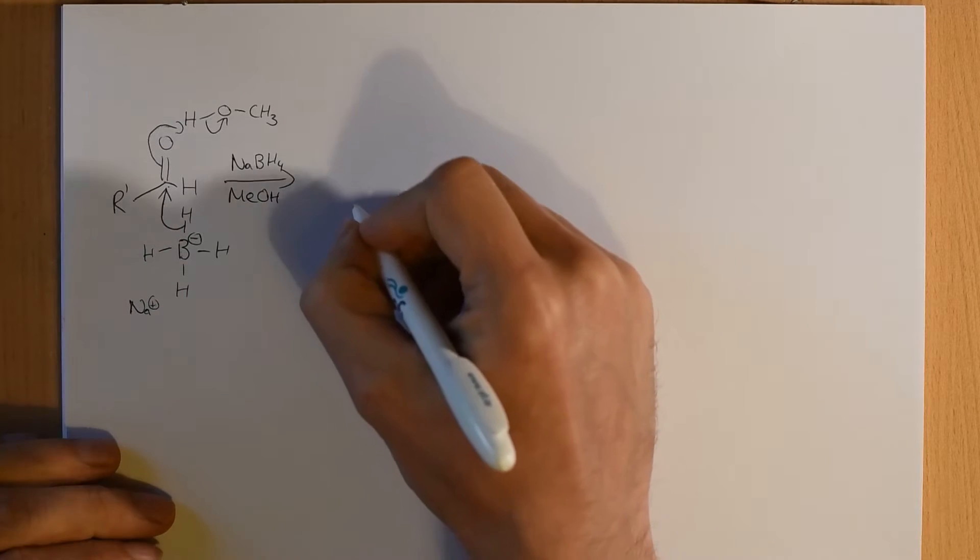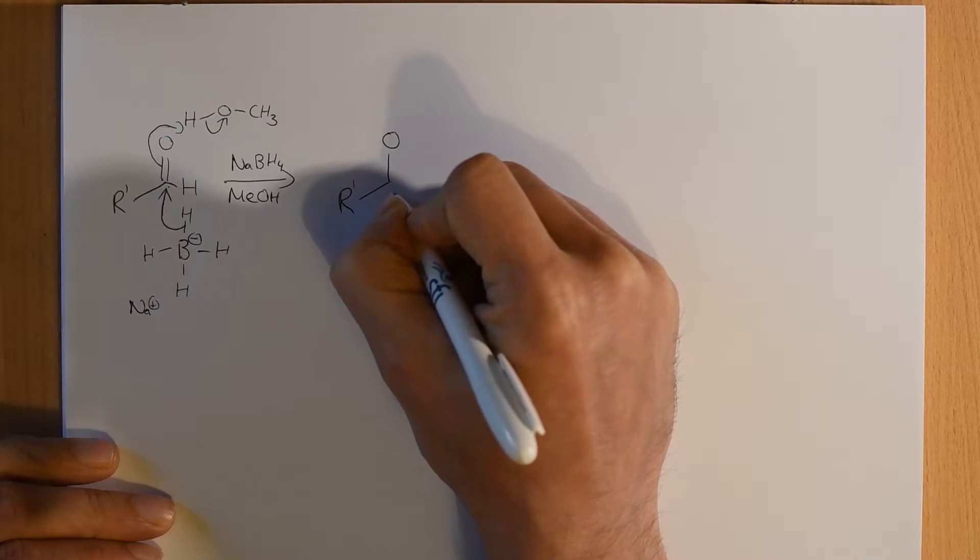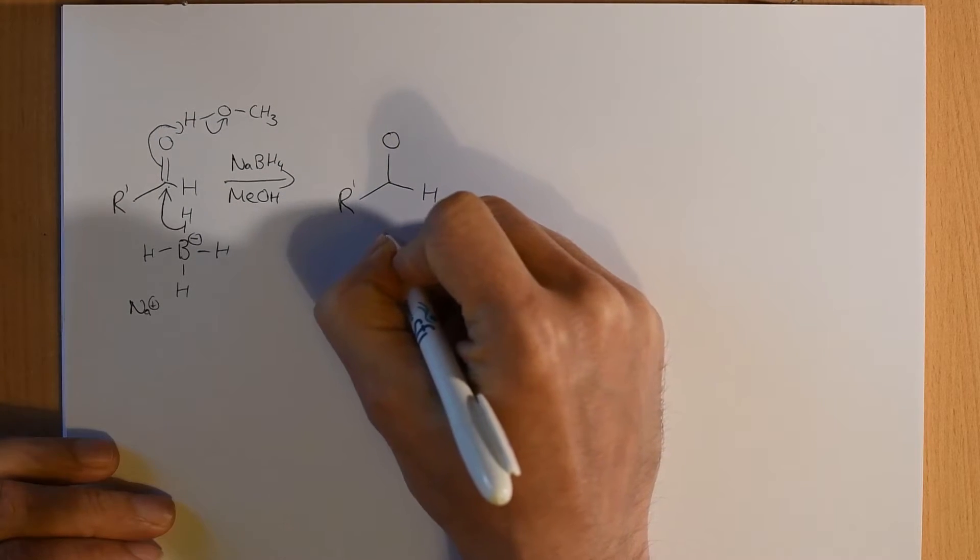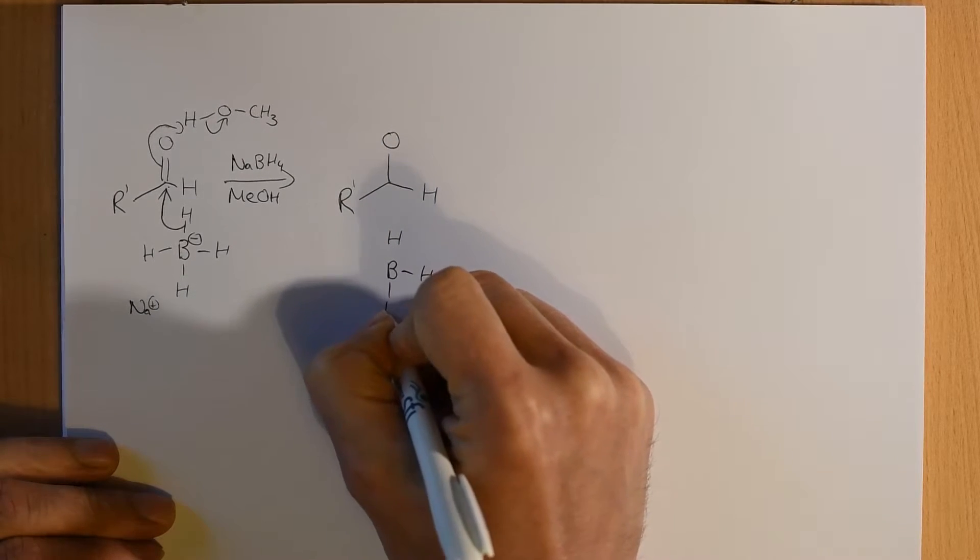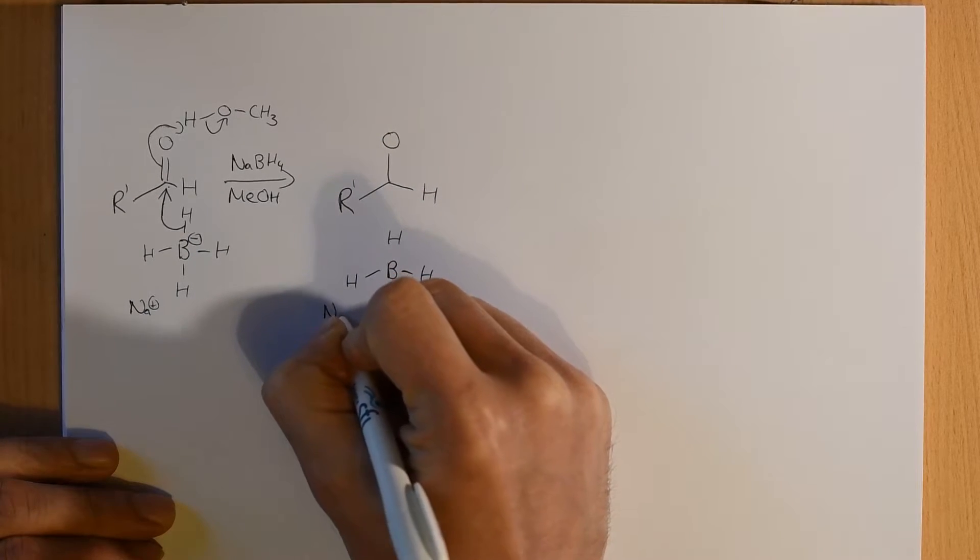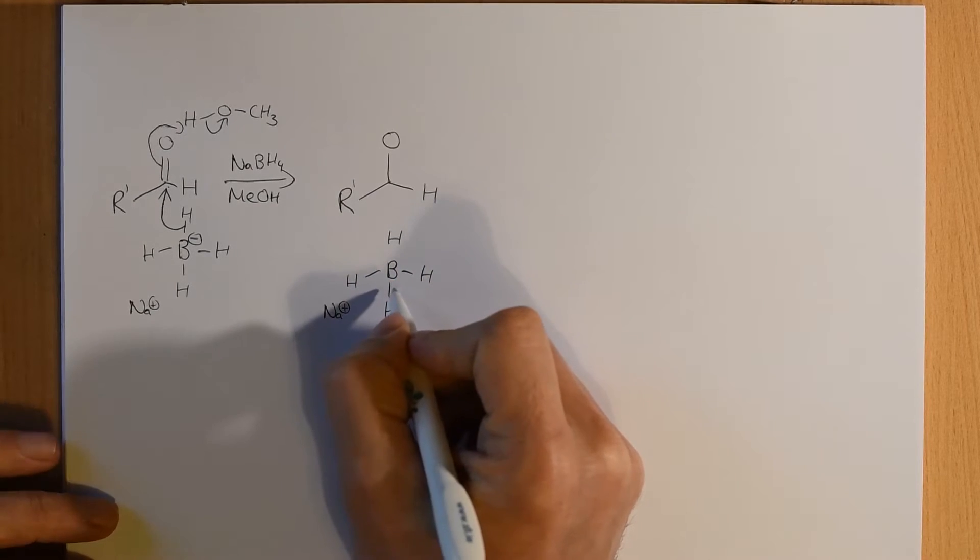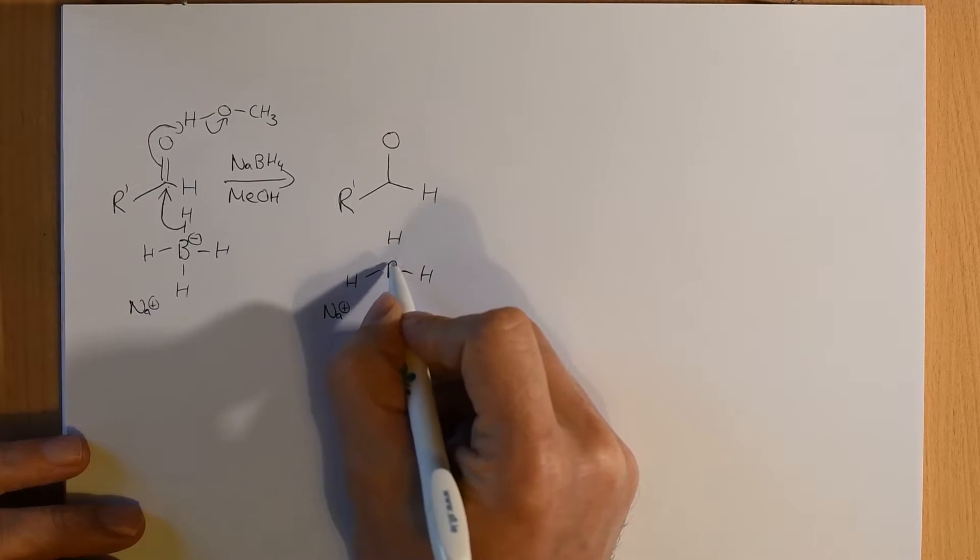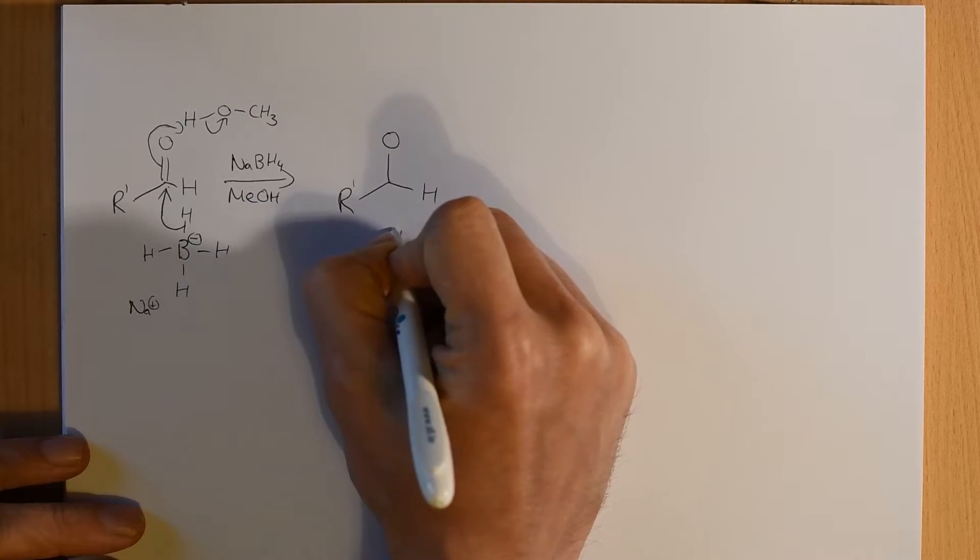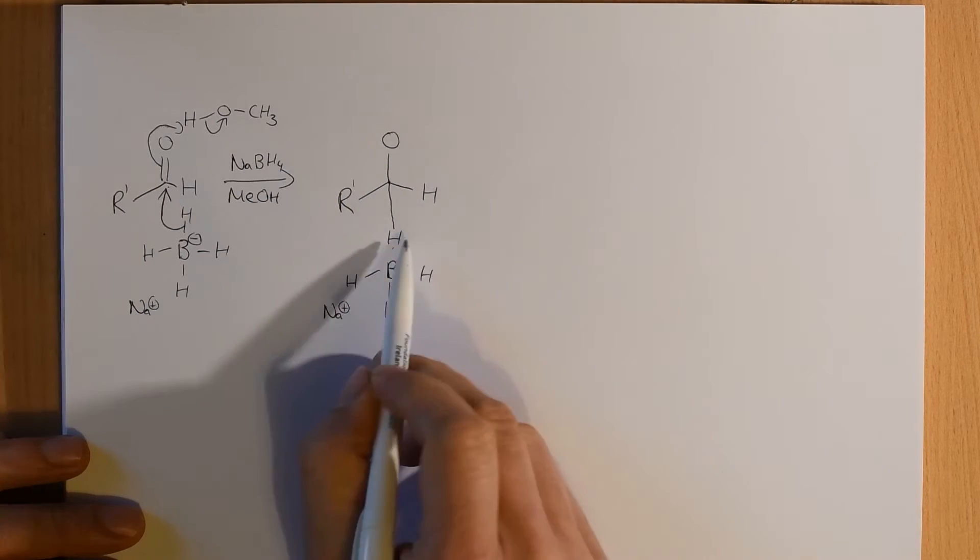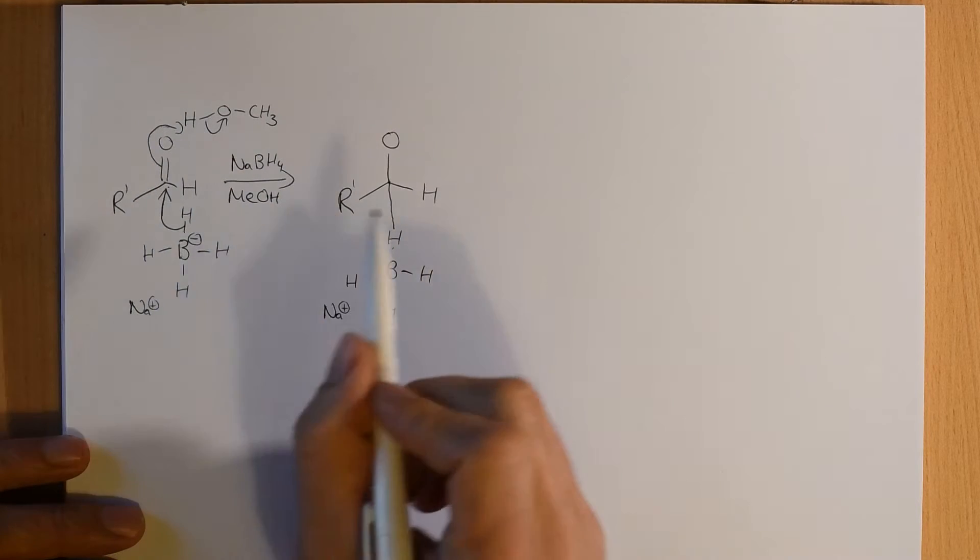And let's have a quick look at what we're left with. So, let's draw out everything exactly as it was, except for the things that we have moved. Our spectator sodium is down there. So, what did we do? We had a borohydride here. It's now lost that pair of electrons. So, boron is neutral. This pair of electrons got moved into a new carbon hydrogen bond.